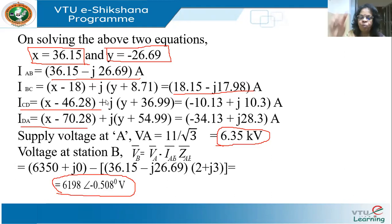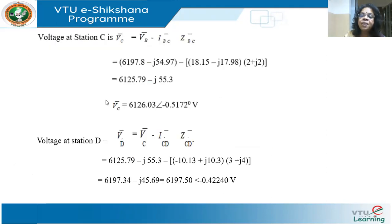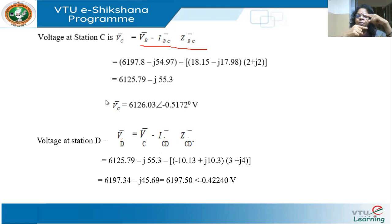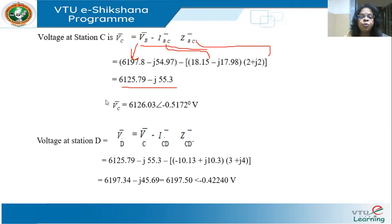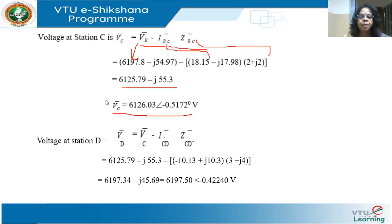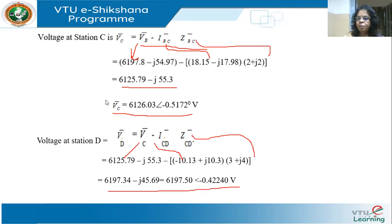The voltage at B is less than the supply — obviously, because we've traveled along the line. Moving from B to C: VC = VB − IBC × ZBC, giving 6125.79−j55.3, which is further reduced. Then from C to D: VD = VC − ICD × ZCD. The voltage keeps decreasing as we move from one node to the next.